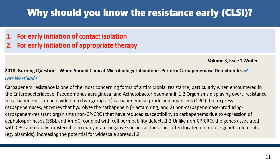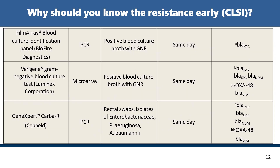This guides clinicians for empirical antibiotics. When should the clinical microbiology laboratory perform carbapenemase detection? For early initiation of contact isolation and early initiation of appropriate therapy. Carbapenem resistance is one of the most pressing forms of antimicrobial resistance, particularly when encountered in Enterobacteriaceae, Acinetobacter, and Pseudomonas organisms. Resistance can be carbapenemase-producing or non-carbapenemase-producing. Results from FilmArray, blood cultures, Luminex, and gene-based assays provide same-day results helping detect resistance genes from the clinical sample.